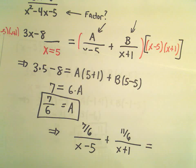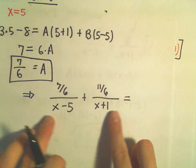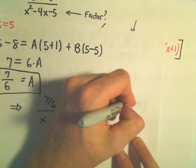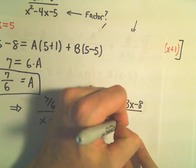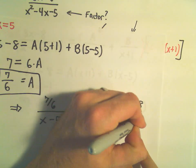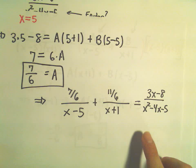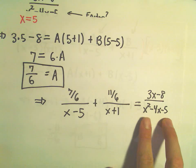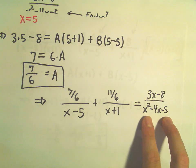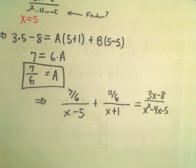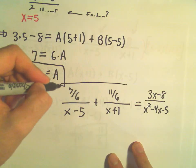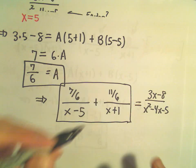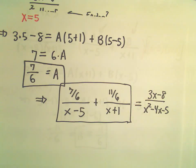This would now be our partial fraction decomposition. You could find that if you end up getting common denominators and writing this back as a single fraction, you'll get back the original rational expression that we started with. And again, that's the goal. We're trying to go from kind of a condensed fraction, if you want to think about it that way, kind of a combined fraction, into its individual factors. So there's our partial fraction decomposition on the left.